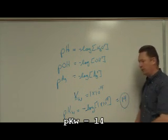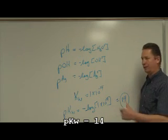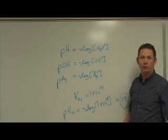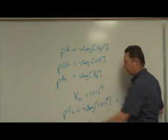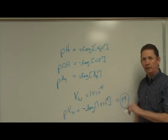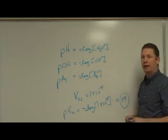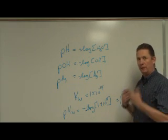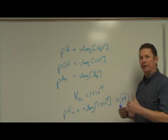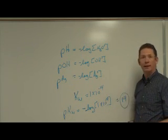That's another number you need to remember — 14. The pKW is equal to 14, and it's really, really useful for calculating pOH and pH. If I know the pH of a solution, I know its pOH. If I know the pOH, I can calculate the pH. I'll show you how that's done.